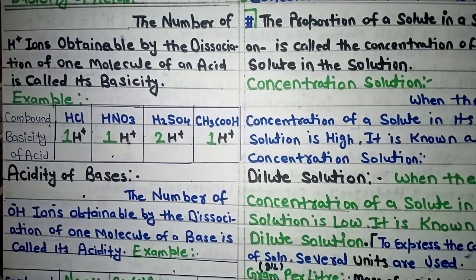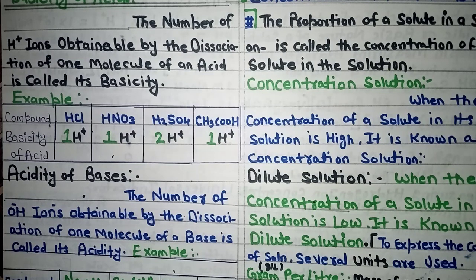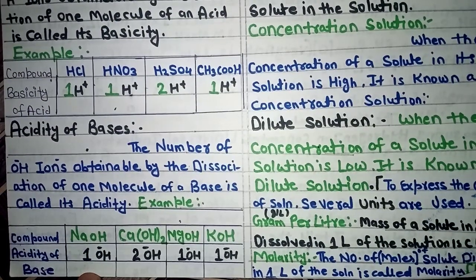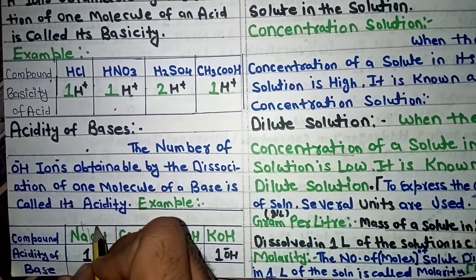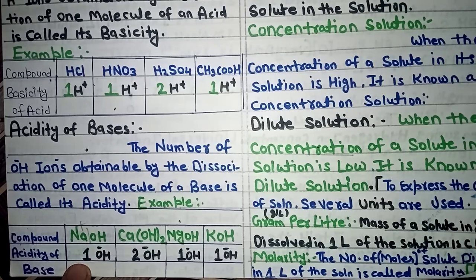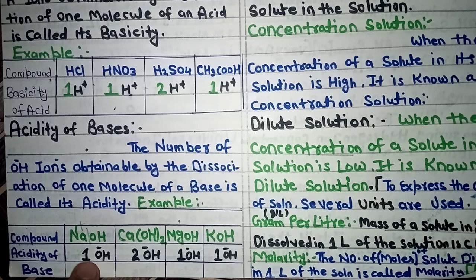Next is acidity of base. Just as we found the basicity of acid, we can find the acidity of a base. Definition: the number of OH⁻ ions obtainable by the dissociation of one molecule of a base is called its acidity. So when you dissolve a base in water, however many OH⁻ ions are released — that is the acidity of the base. Example: sodium hydroxide (NaOH) dissociates into Na+ and OH⁻. There is only one OH⁻ ion, so the acidity of sodium hydroxide is 1.